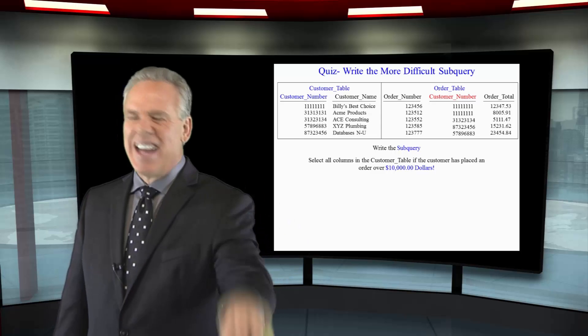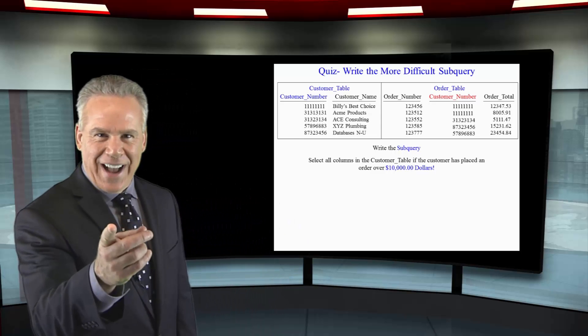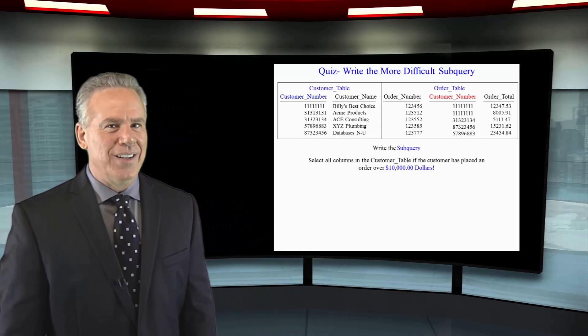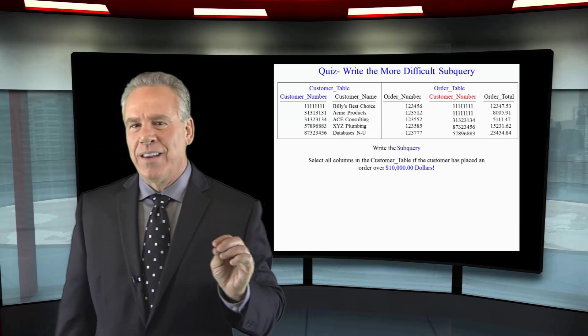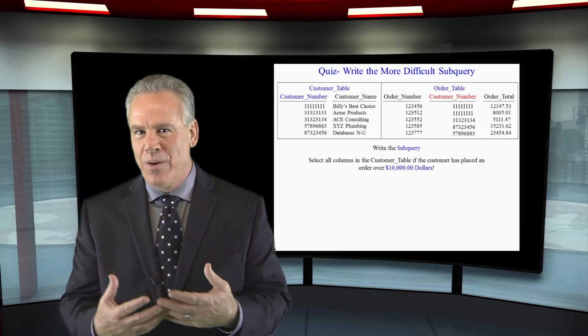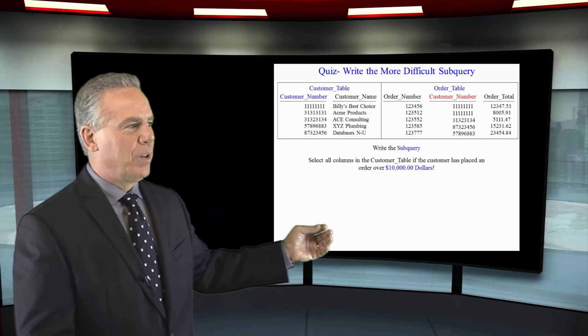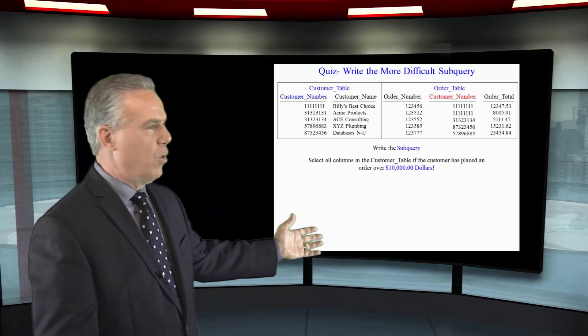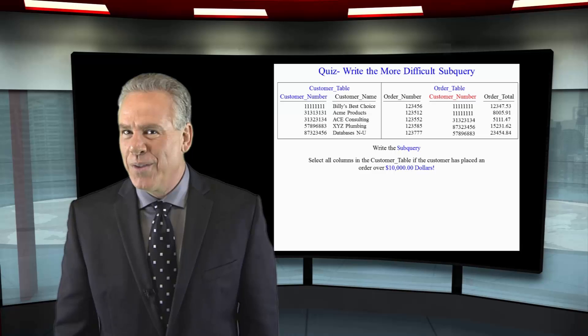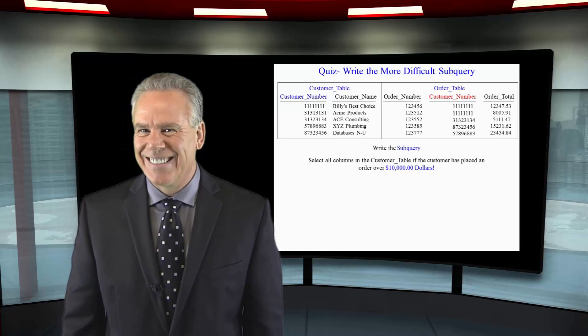Okay, now you got lucky with that last query. Don't get cocky. I've got another one a little bit tougher for you. Select everything from the customer table if the customers placed an order in the order table greater than $10,000. Good luck.